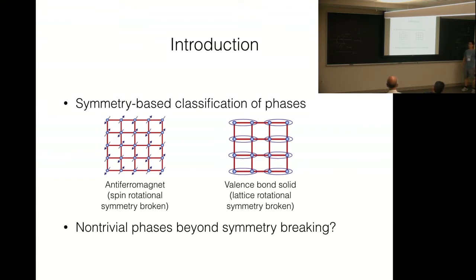So, traditionally, quantum phases are distinguished by their symmetry-breaking patterns. For example, in the left, the system breaks spin-rotational symmetry and we call it a ferromagnet. And in the right, the system breaks translational-rotational symmetry and we call it a valence bond solid. So, the last question is, are there non-trivial phases beyond symmetry-breaking? But now, the answer is very well-known. The answer is yes.